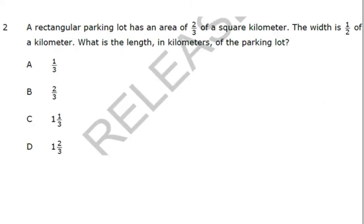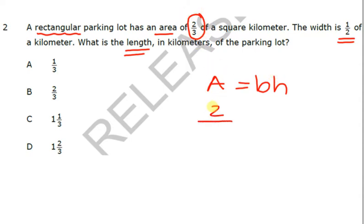All right, let's take a look at this one here. A rectangular parking lot, that's very important, rectangular, has an area of two-thirds of a square kilometer. The width is one-half of a kilometer. What is the length? Now, think, don't think about the fractions. Think rectangle and area. You know area equals base times height. Plug in what you know. You know the area, 2 over 3. And you know the width, which is going to be like the height. So you don't know the base, but you do know the width.